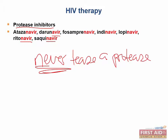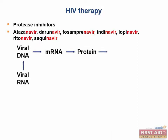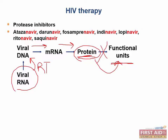Thinking back to virology, here is a simple flow diagram of HIV replication. The viral RNA converts itself to DNA through the reverse transcriptase enzyme unique to these viruses. It then follows the central dogma: DNA is transcribed into RNA, RNA is translated into protein, and protein is then turned into functional units. The protease is responsible for this last step — it converts the protein into its functional unit. These drugs inhibit this step and prevent HIV from producing its functional units, rendering it unable to replicate.